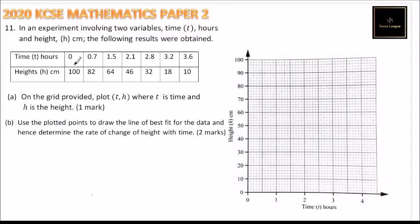So we start with the first step. When t is 0, the height was 100. So we put our mark there. When t is 0.7, 0.7, these are 10 units. So 0.7 there, we have 82. So here is 0.7. Here it is 10 units. So it means 82 is 1 unit. We have our point there.